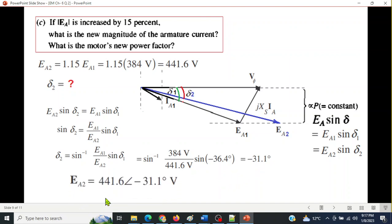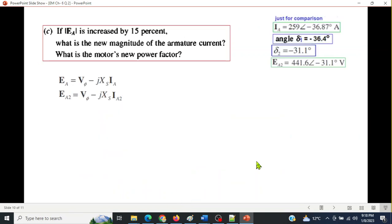So Ea2 now in the phasor form 441.6 volts and angle minus 31.1 degrees. So this is new Ea. And now we have to find the armature current for this, for Ea2, because the armature current will vary. And just for reference, Ia or Ia1 had this angle minus 36.87. Then delta 1 had this angle minus 36.4. And Ea2 had minus 31.1, so it is gradually going this way, angle moving.